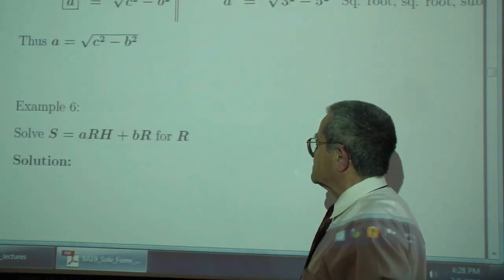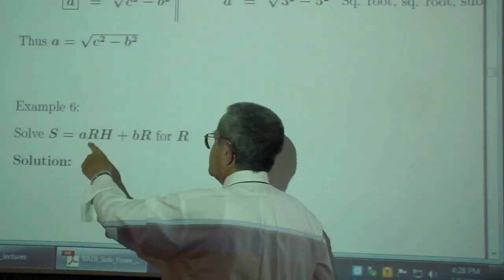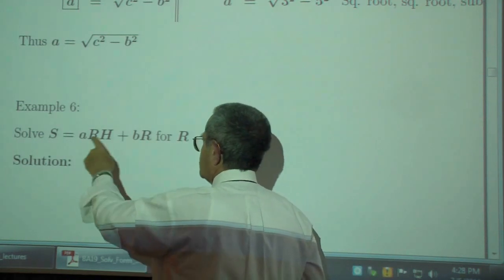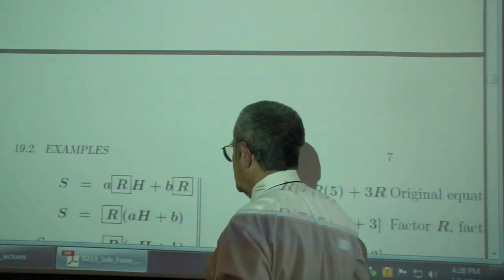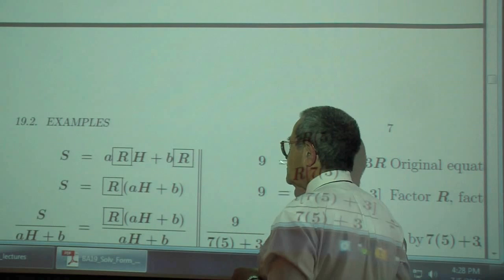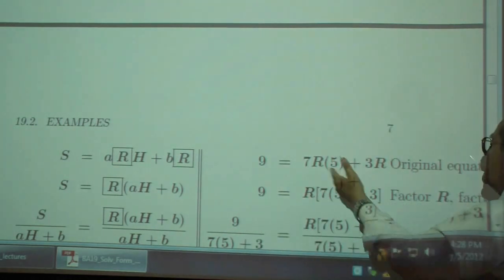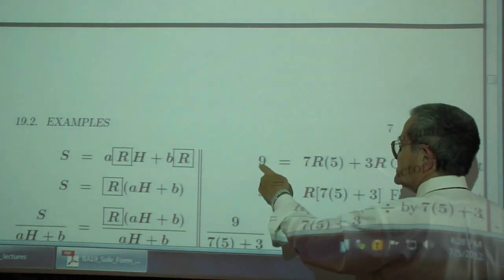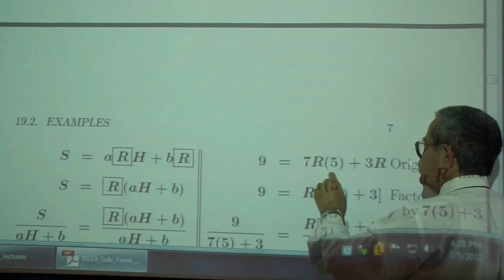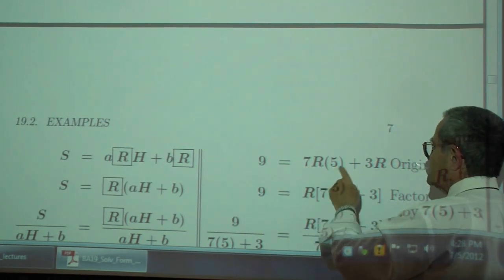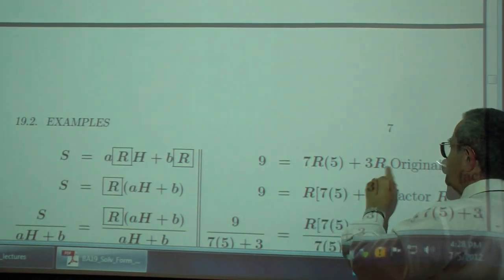Example 6. Solve a times RH plus BR for R, so we have a variable here and here. Box in the variable, put in some numbers like S is 9, a is 7, R is your unknown, H is 5, and B is 3.